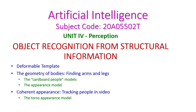In today's artificial intelligence class we will see object recognition from structural information, from the fourth unit on perception. Under today's class we will see the deformable template — how this template is used to detect a person and the geometry of bodies, that is finding arms and legs. For this we can use the cardboard person model and appearance model. After that we will see coherent appearance, that is tracking people in a video.